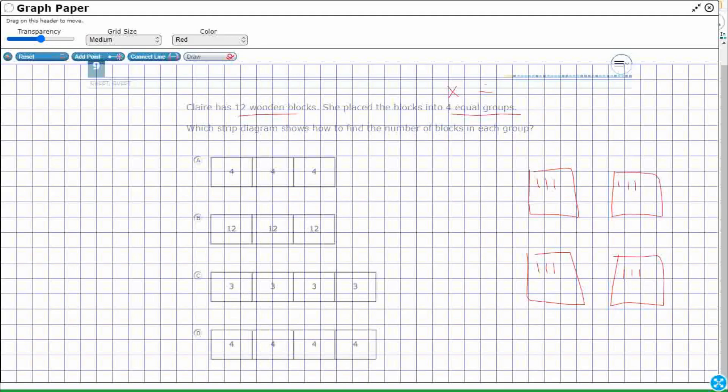All right, so I've got 12 blocks split up into four equal groups. Looks like I'm going to have three groups or three blocks in each of these groups.